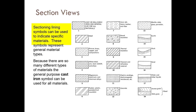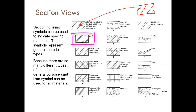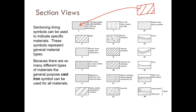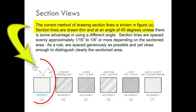Section line samples can be used to indicate specific materials. The first example shows cast iron, represented by the standard 45-degree cutting plane line. Sometimes you need to cut different materials — not always cast iron. You can cut steel, plastic, or wood, so you need to understand the pattern or shape of each material's section lines. Section lines are usually drawn at 45 degrees.